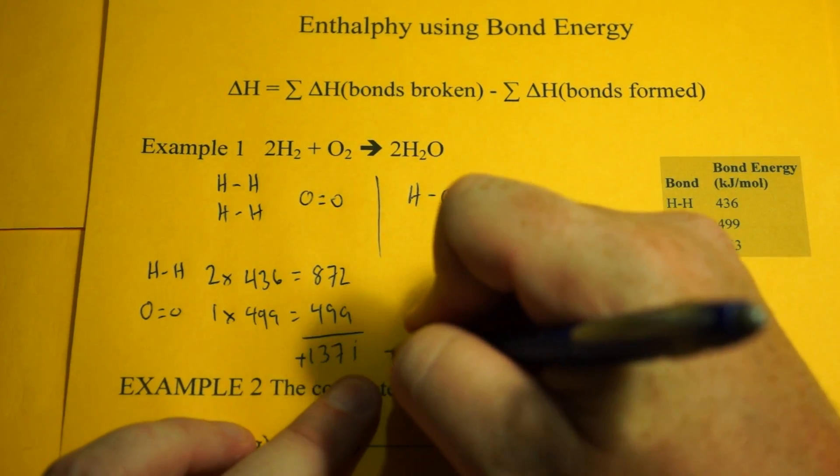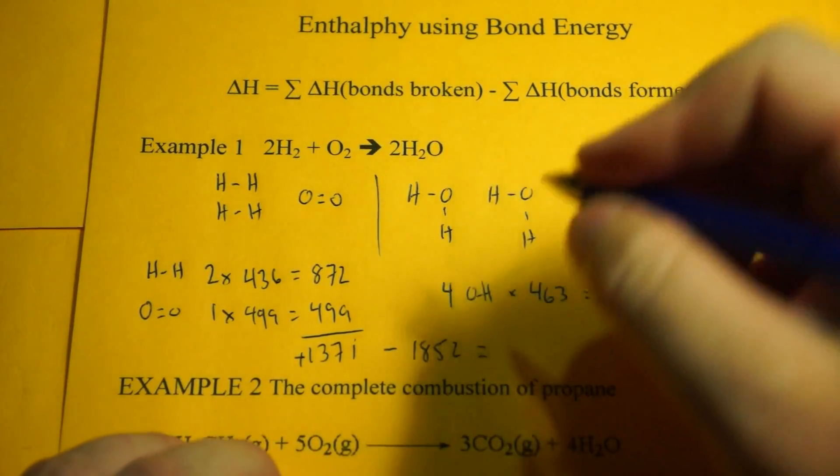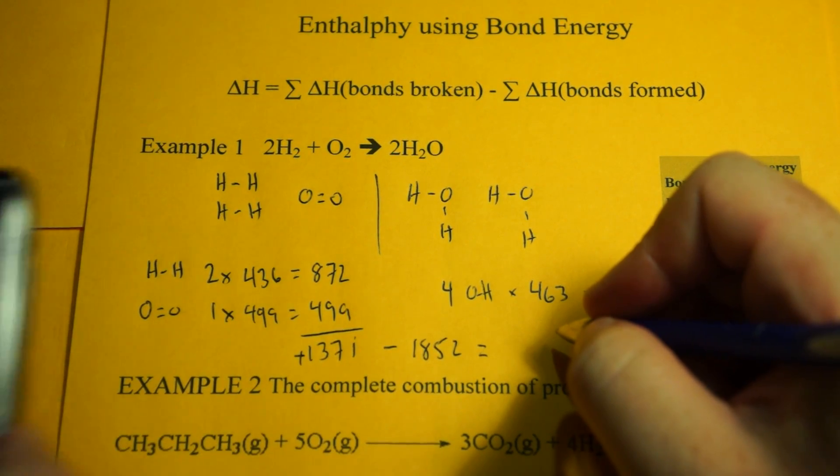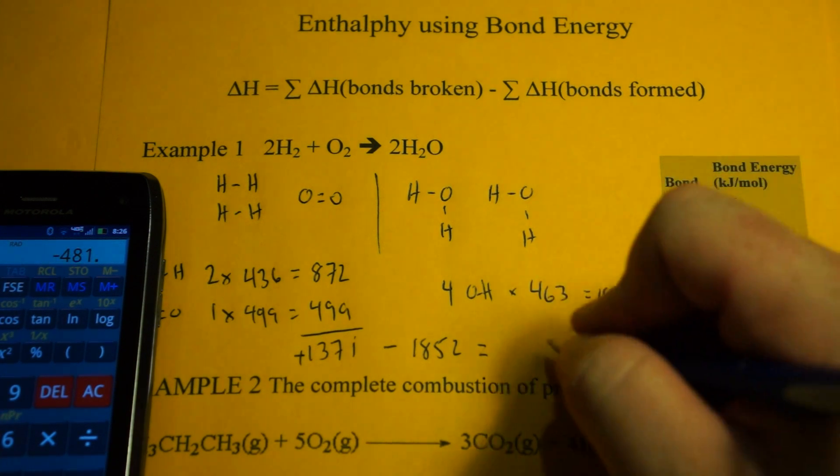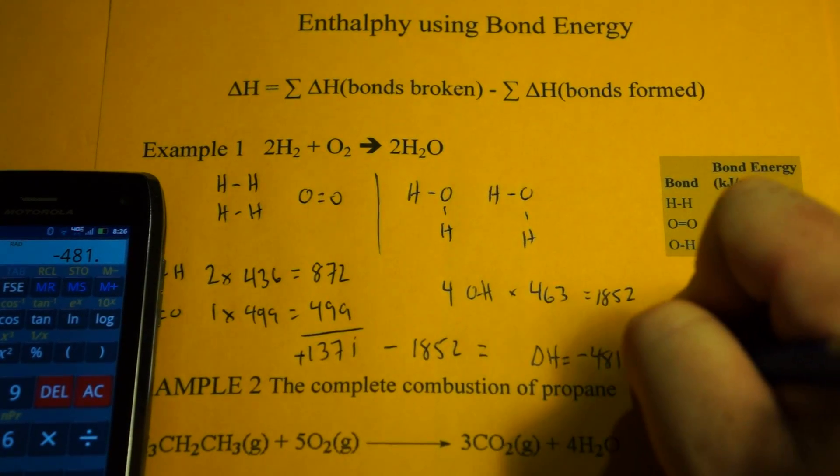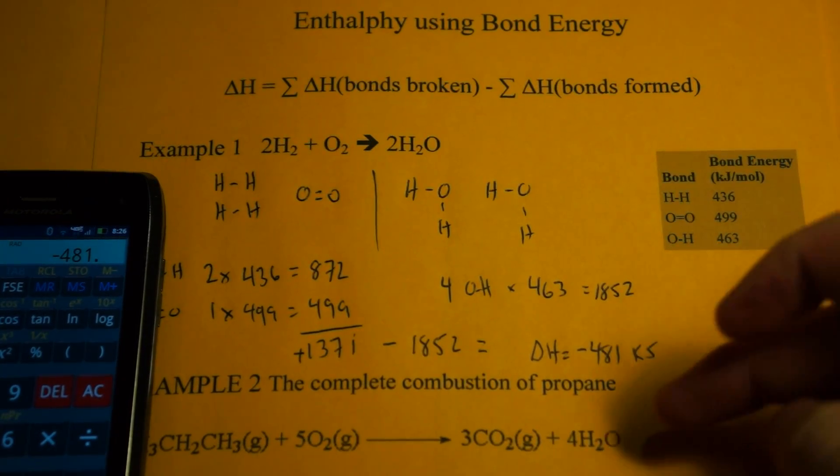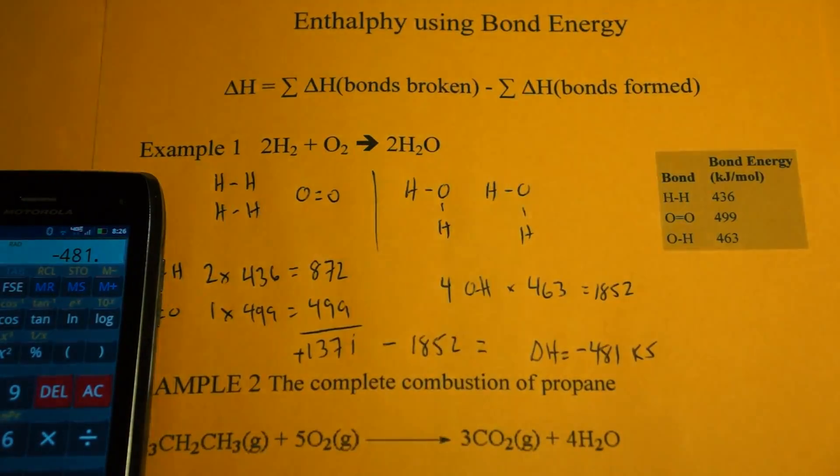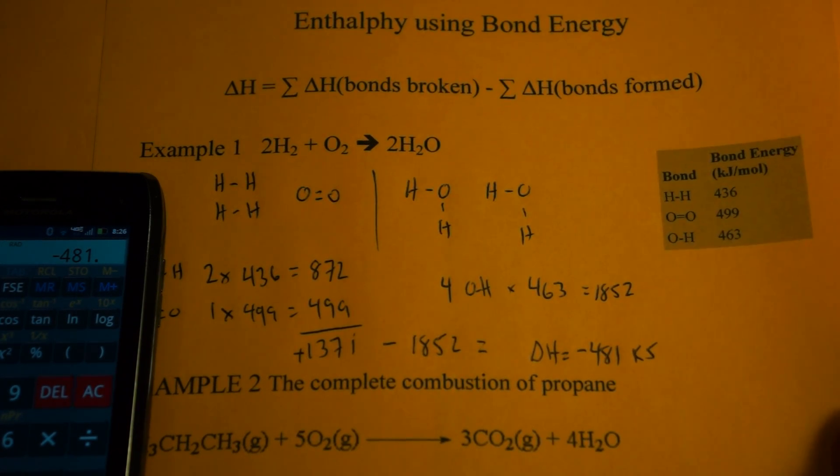So we have 1,371 minus 1,852. That's going to be a negative number. 1,371 minus 1,852, and our delta H is equal to negative 481 kilojoules. And that's it. We don't put per mole because there's a 2 here, it's per 2 moles. That's how you do your delta H for the combustion of hydrogen.